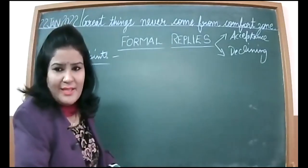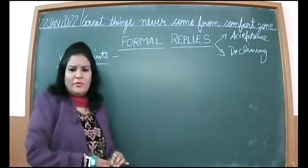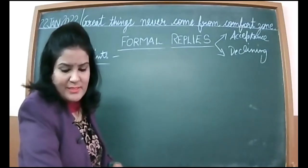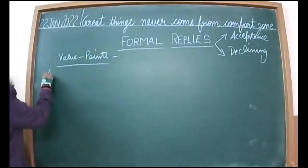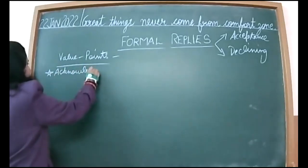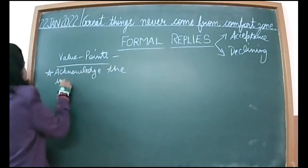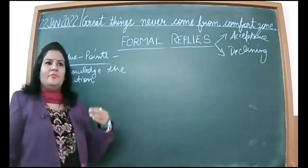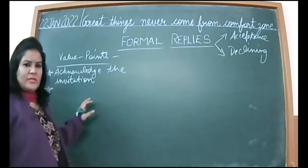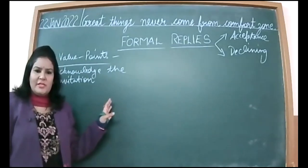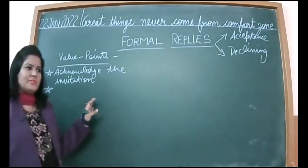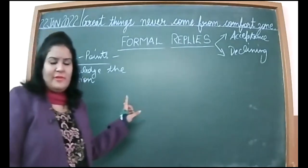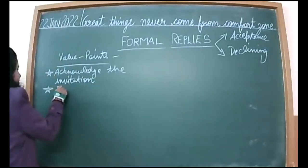The first and foremost value point is: you have to acknowledge the invitation. Acknowledgement here means that the person has invited you and you will be thankful towards that person in the very first line. You will be thanking the person in third person by acknowledging it - you have been recognized or chosen by that person as their invitee. So firstly acknowledge the invitation, then express thanks in third person.